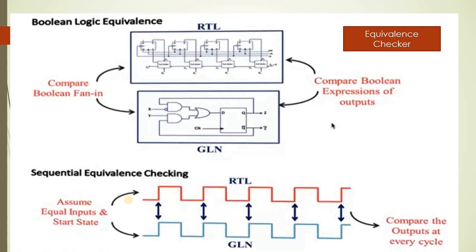In formal verification, we use an equivalence checker tool. We feed two inputs: the RTL and the gate-level netlist (GLL). The tool compares the boolean expressions of inputs and outputs. If there is any mismatch between the RTL and the gate-level netlist, it generates bugs; otherwise, the gate-level netlist is verified and meets the specifications. In gate level simulation, we verify the gate-level netlist directly through simulation — in the gate-level netlist, even flip-flops are designed using gates.